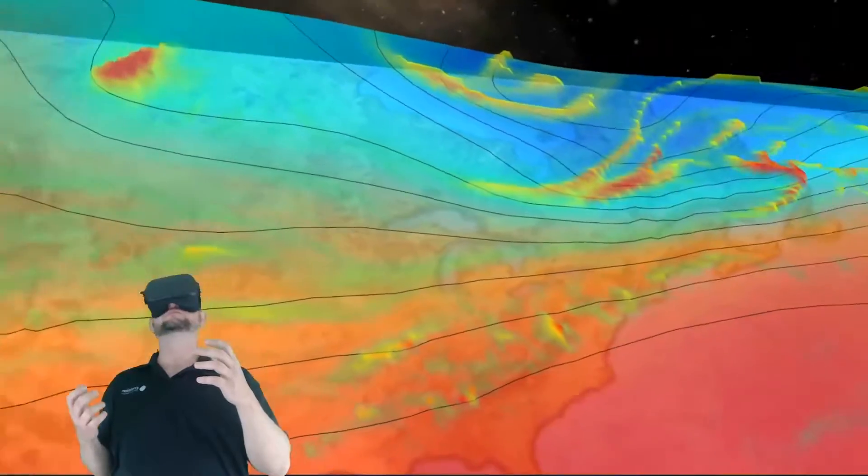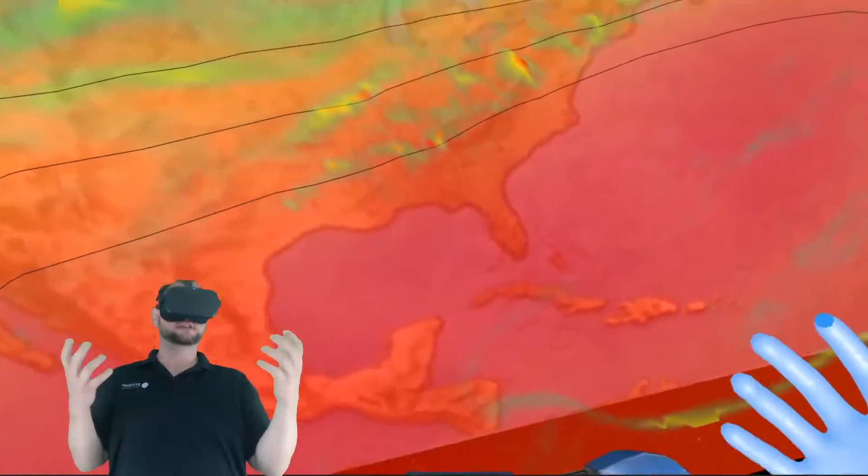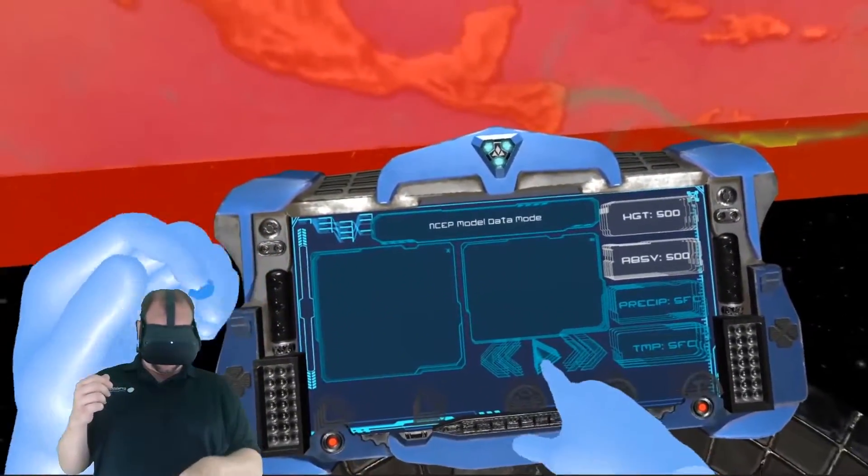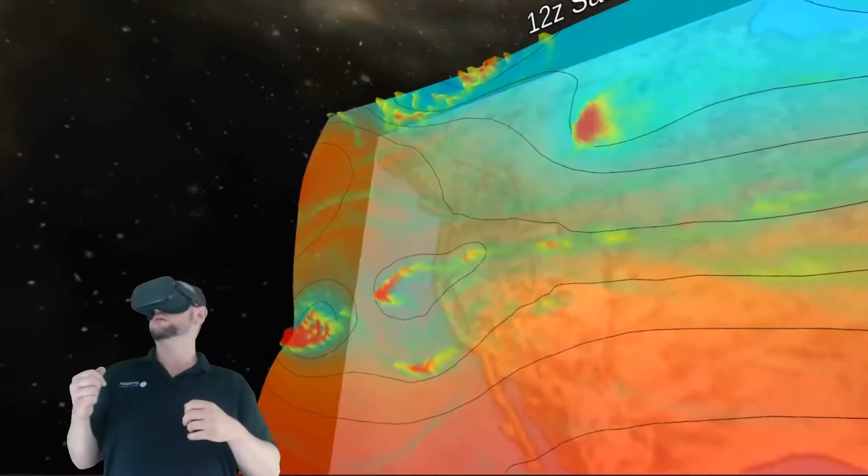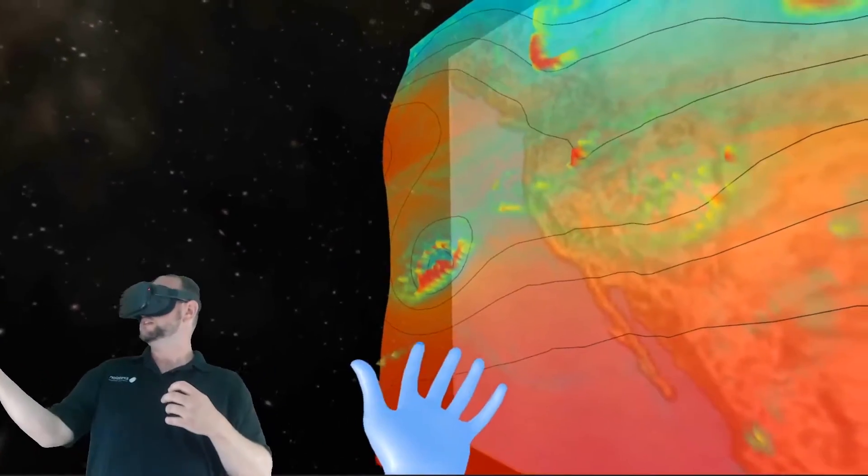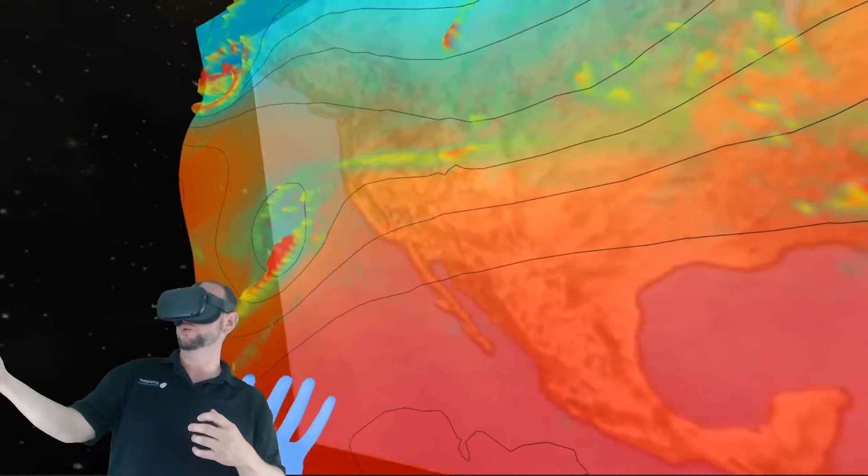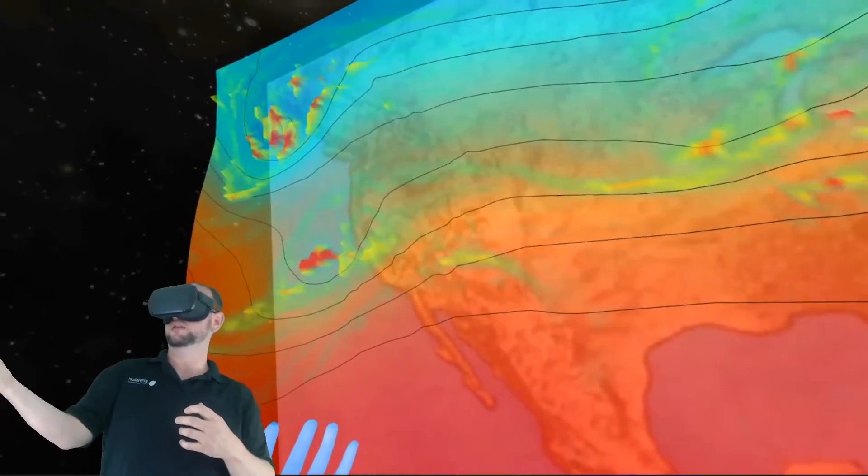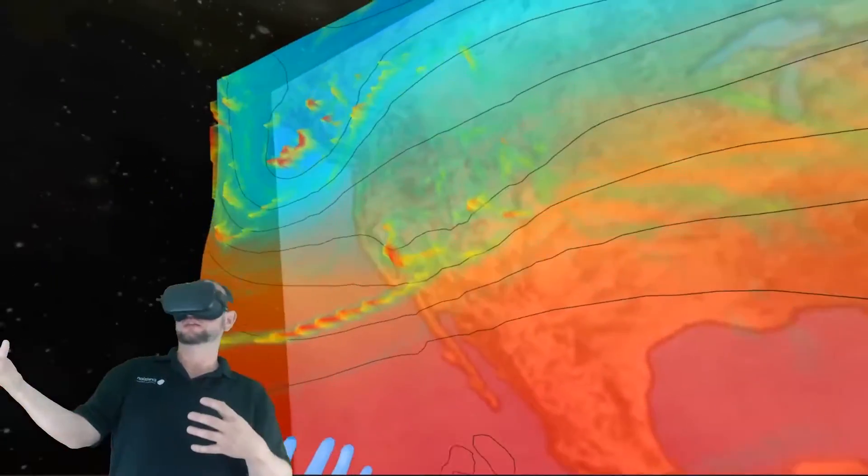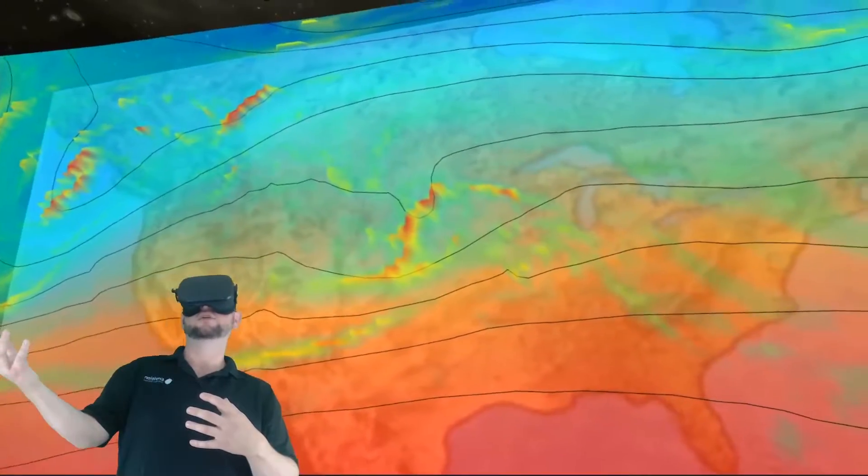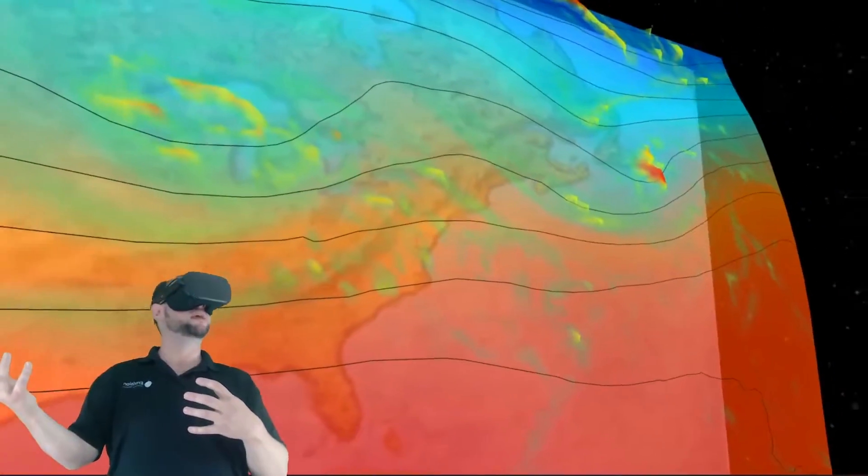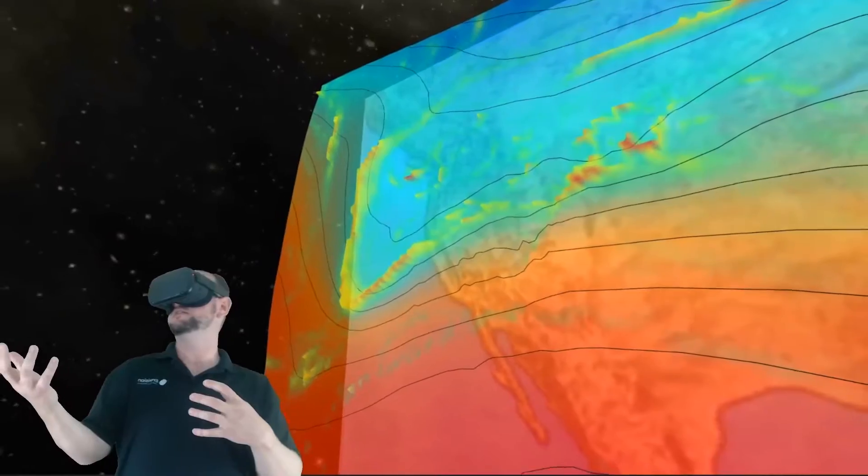And then what we can do is plot things like cyclonic vorticity. And since this is model data, we can animate it so we can see the cyclonic vorticity pool up in an upper level low. I've never seen anything like this out there yet. So this is an amazing way to view upper level heights and the vorticity that goes along with it.